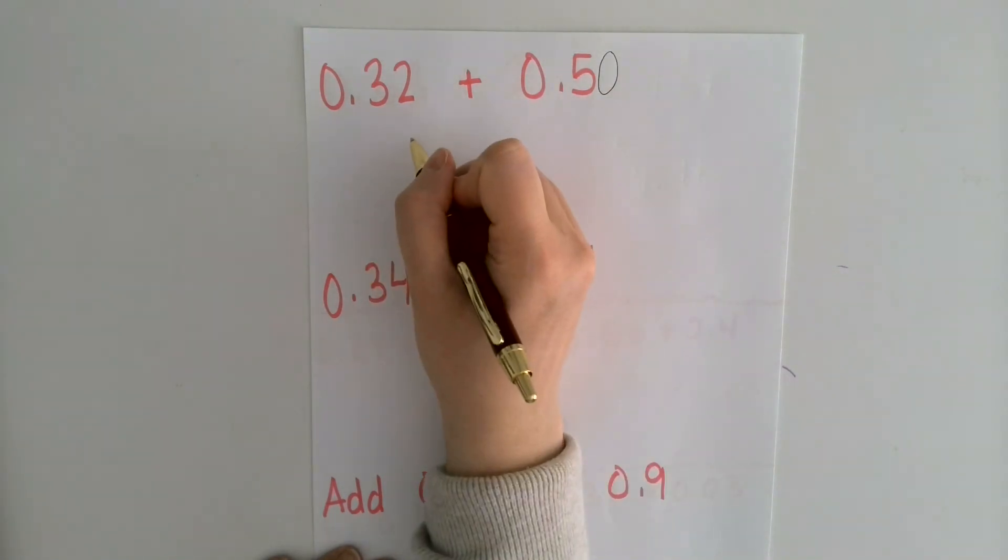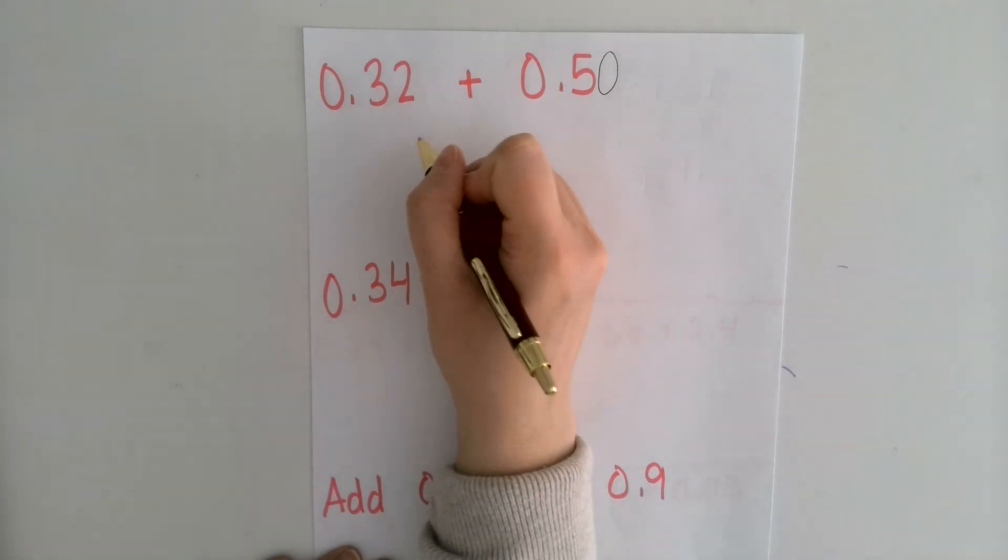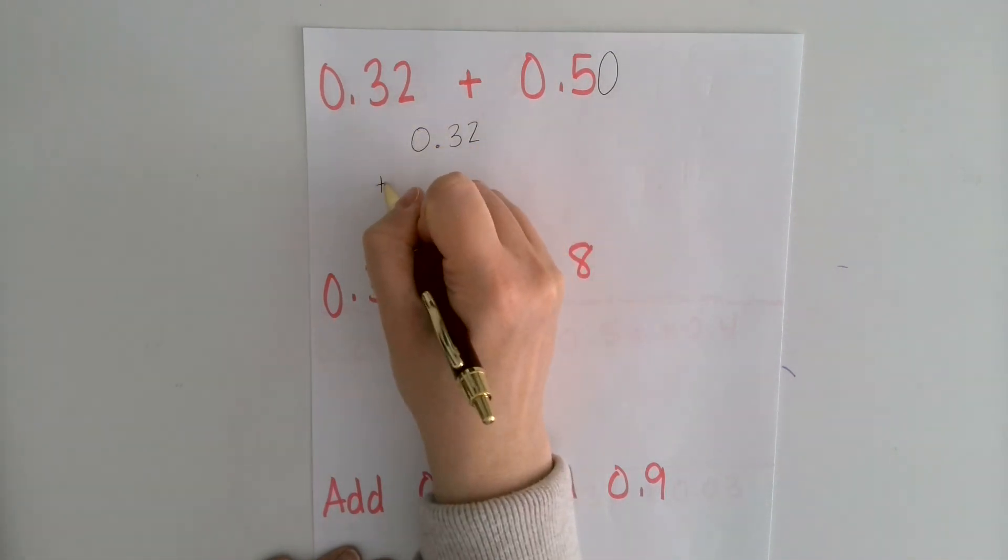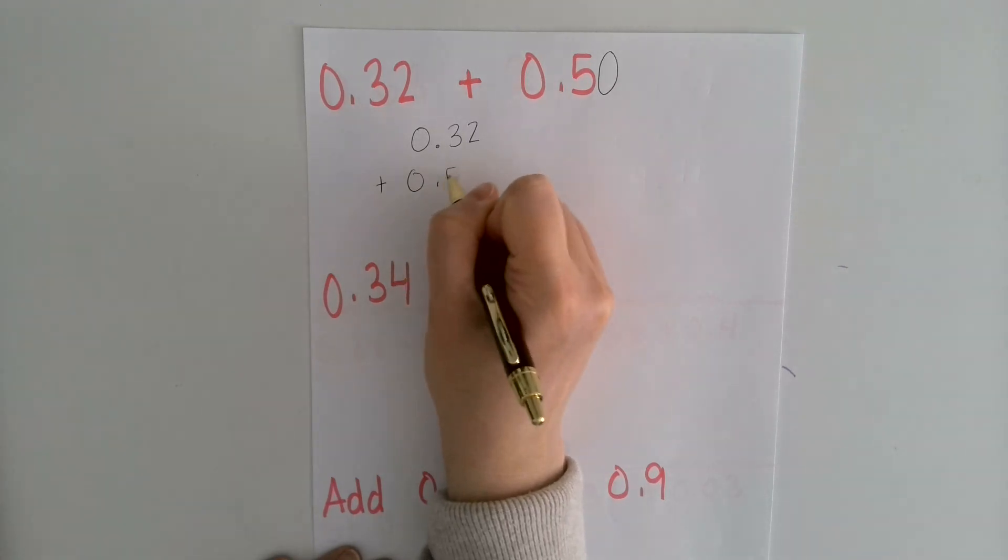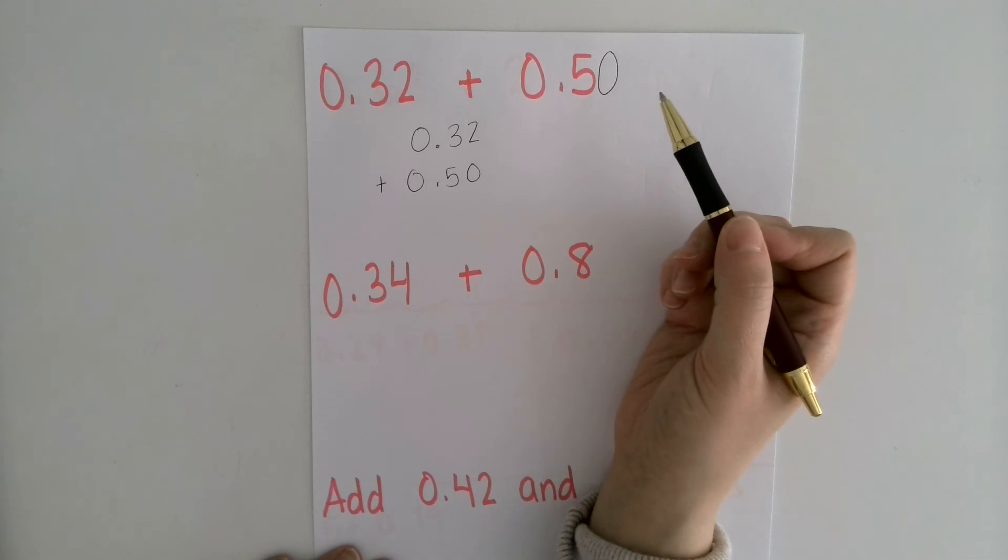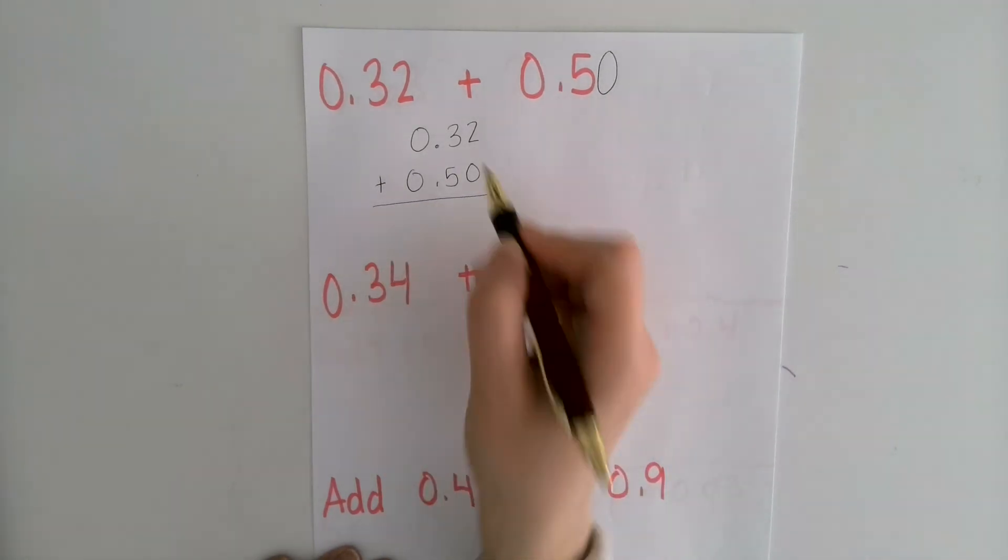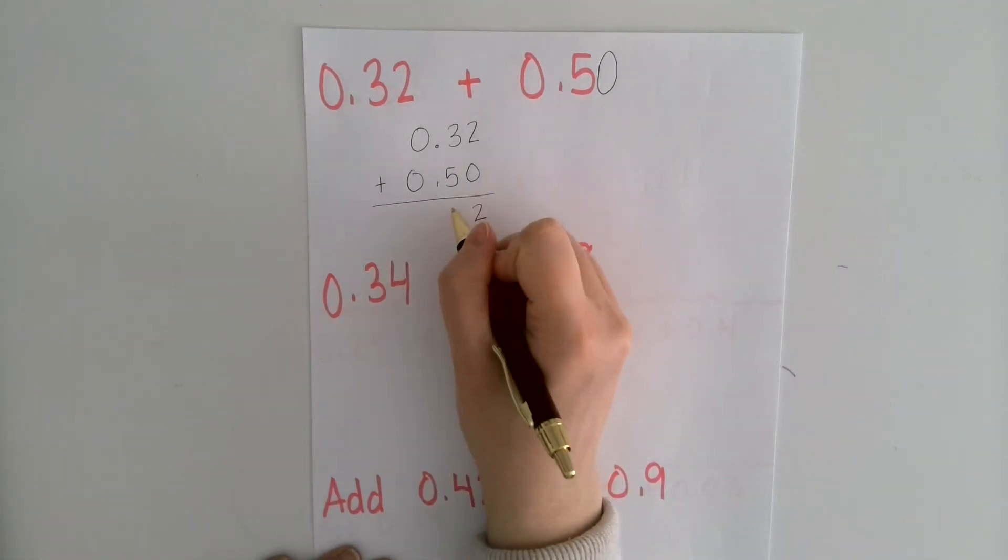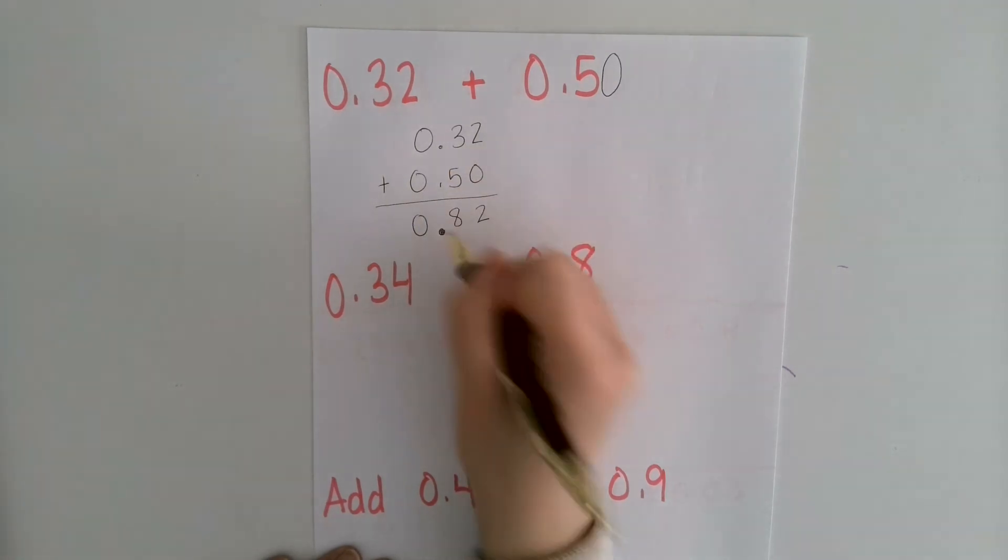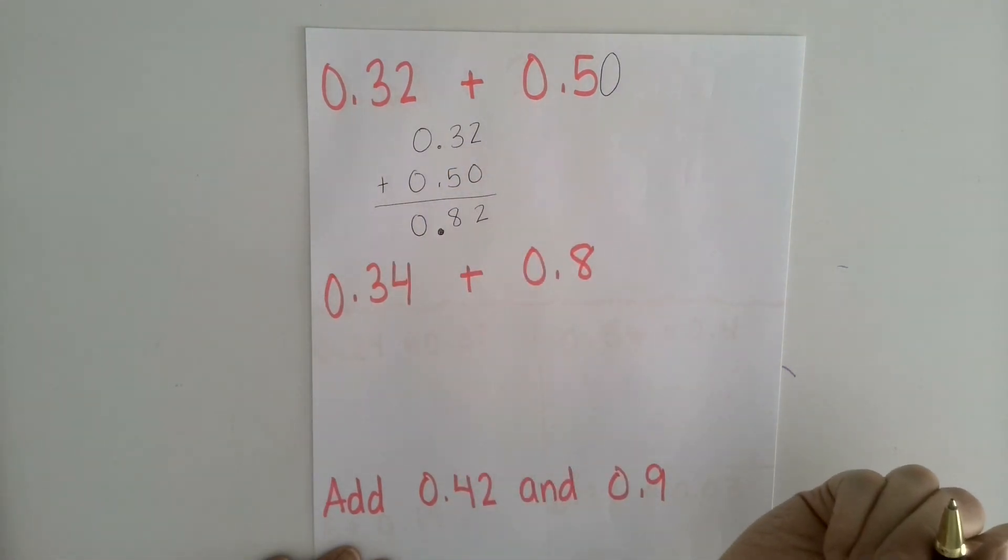Now when I go to write them, they're going to line up perfectly, which will make my work a little bit easier. So 0.32 plus 0.50. And remember, we can do that because 5 tenths and 50 hundredths are the same thing. 2 plus 0 is 2. 5 plus 3 is 8. 0 plus 0 is 0. And then I just bring that decimal point straight down and I end up with 0.82 in my answer.